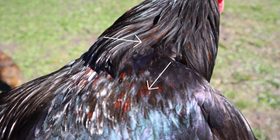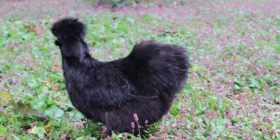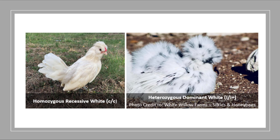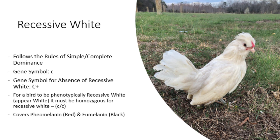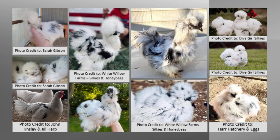Depending on how much red leakage there is, it might be faster to start over with other white birds, especially if your starting birds aren't good examples of the breed. We can tell which type of white a chicken has by which type of pigment the gene affects. Recessive white affects both eumelanin and phaeomelanin and generally can fully inhibit both pigments, turning the bird entirely white in homozygous form. Dominant white is a leaky gene — in heterozygous form it typically only affects eumelanin. The reason we call it leaky is that in heterozygous form it allows black pigment, which it should be inhibiting, to show through, as if it were a white sheet with holes in it.